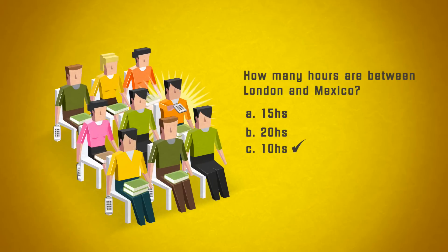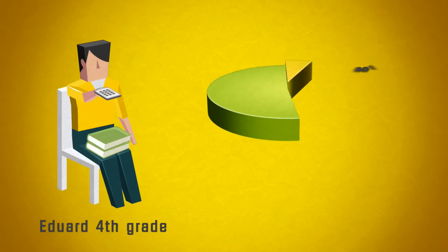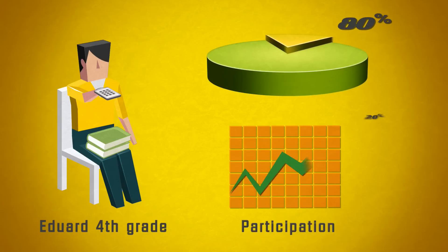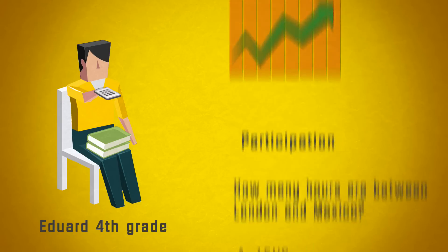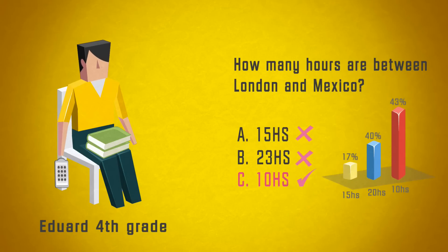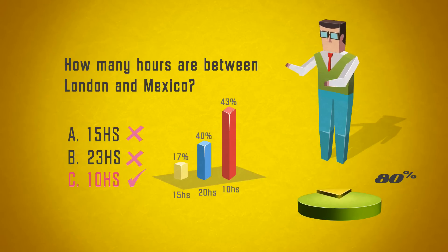Students are able to participate in class anonymously among their peers, but can be uniquely identified to monitor progress, perform assessments, and track participation. As students participate, they gain immediate feedback, and instructors can assess comprehension instantly to facilitate better understanding and learning.